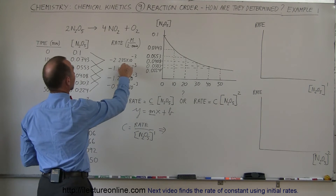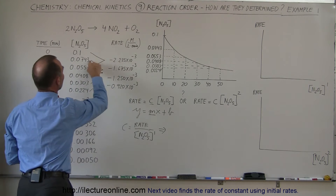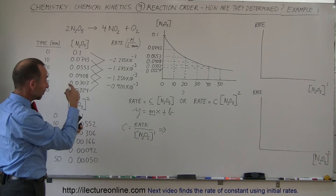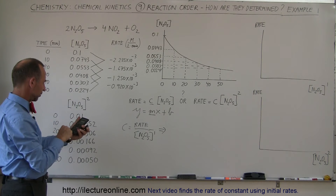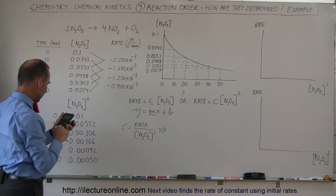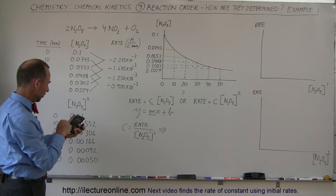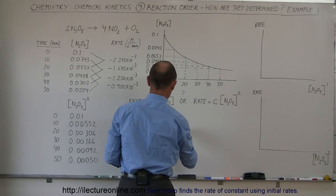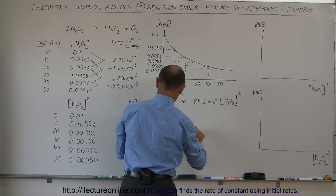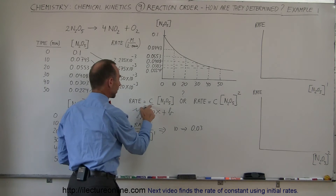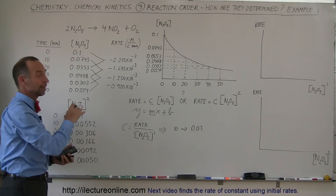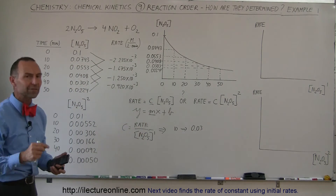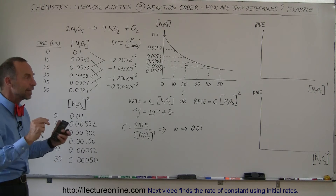We take the rate and divide it by the concentration to the first power. This number divided by that number: 2.235 × 10⁻³ divided by 0.0743 equals 0.030. So after 10 minutes, that ratio gives us 0.030. For 20 minutes: 1.675 × 10⁻³ divided by 0.0553 also equals 0.030. If the constant is the same at every point, we have a linear relationship. If not, we have a curve and the wrong order.